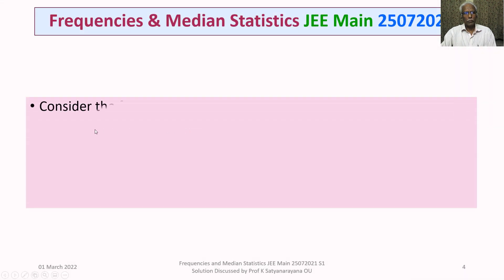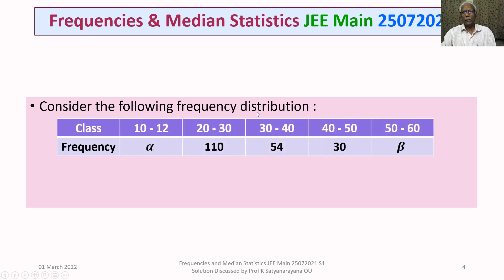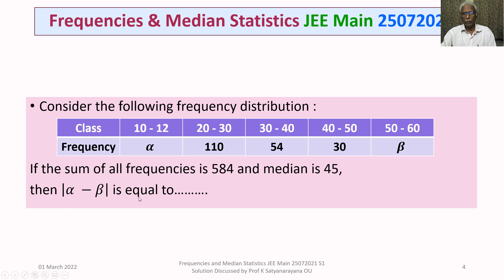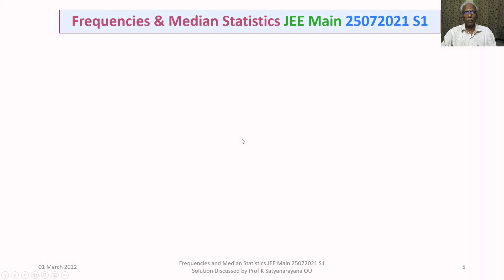The problem is: consider the following frequency distribution. The class 10 to 20 has frequency alpha, class 20 to 30 has frequency 110, 30 to 40 has frequency 54, 40 to 50 has frequency 30, and 50 to 60 has frequency beta. If the sum of all frequencies is 584 and the median is 45, then find the value of |alpha minus beta|.